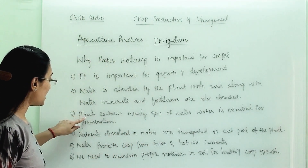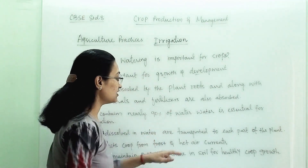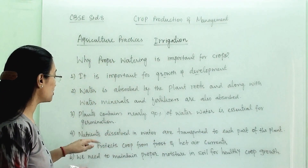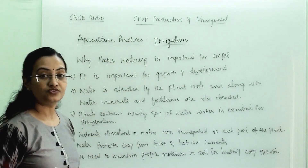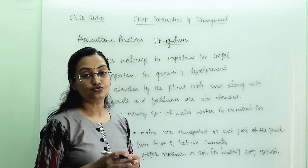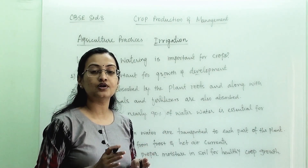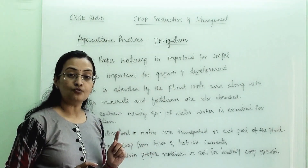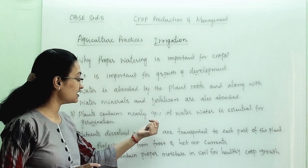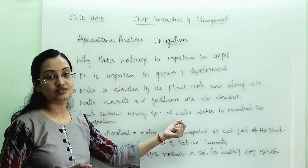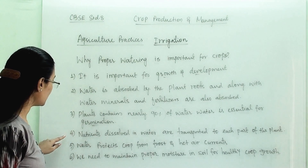Third, plants contain nearly 90 percent water, and water is essential for germination. Under dry conditions, seeds will not germinate. Seeds require a proper amount of moisture so that they will germinate, and nearly 90 percent of water will be present in the plant.